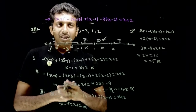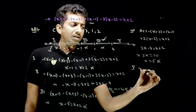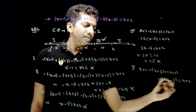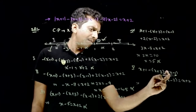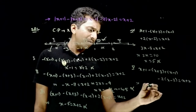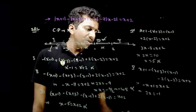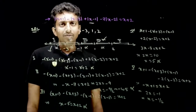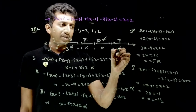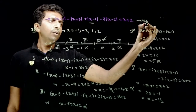Lastly, for x greater than 2, all expressions are positive. The equation becomes: (x+1) - (x+3) + (x-1) - 2(x-2) = x+2. Simplifying: x - 2x - x gives constants +1-3+4-2 = 0, leading to 2x = -1, so x = -1/2. But x = -1/2 does not lie in the interval x > 2, so this is also not valid. Therefore, the answer is no solution.